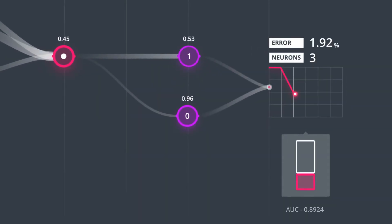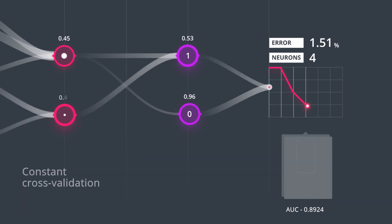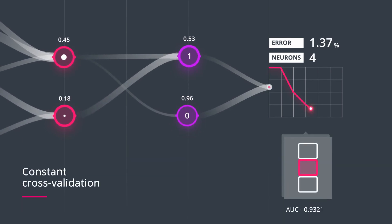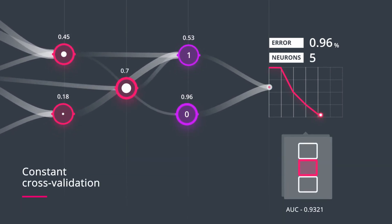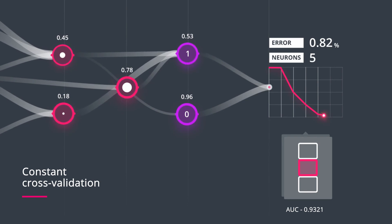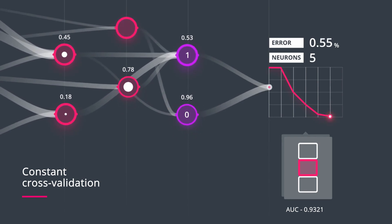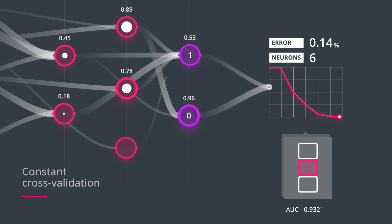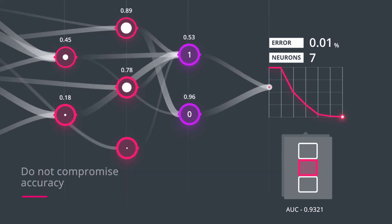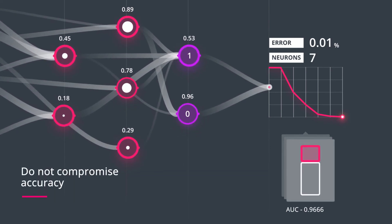The neuron-by-neuron growth makes it possible for cross-validation to occur progressively, which is typically not feasible with a standard approach. The combination of these characteristics also increases the generalizing capabilities of the model, which allows for creation of compact models without compromising accuracy.